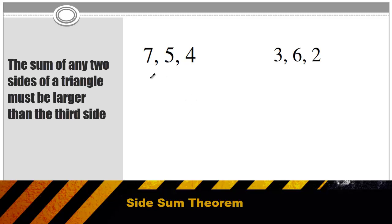So on the left, we could write 7 plus 5, that must be greater than 4, and that's true. And 5 plus 4, that has to be greater than 7, and that's true as well. And 7 plus 4 must be greater than 5. All three statements are true, so those could be the sides of a triangle.